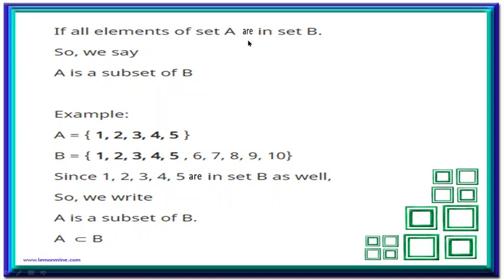If all the elements of set A are in set B, we can say that set A is the subset of B. For example, let's take set A and set B — two different sets. Since all the elements of set A are in set B, we can say A is the subset of B. This is the symbol which represents subset, and we read it as: A is the subset of B.